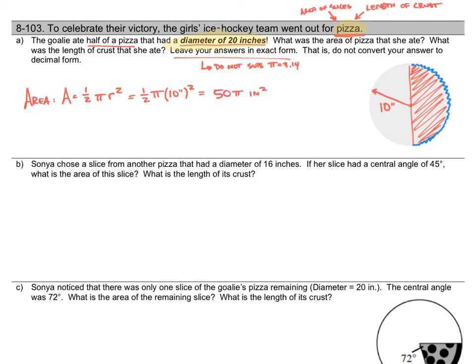We were asked for exact form, so I'm going to keep it in exact form. I want to take a quick look at how I calculated this. This portion right here is the formula for the area of a circle, and this piece right here is the ratio — that's how much of the circle the goalie ate. She ate half of it, so we did one-half times the area. This is the strategy we're going to use throughout the rest of this page.